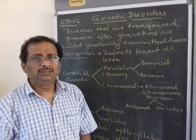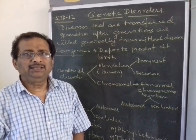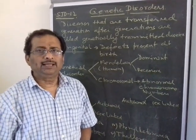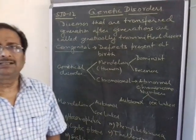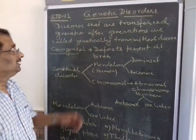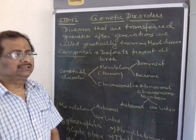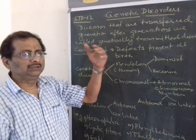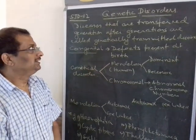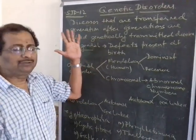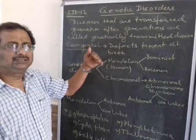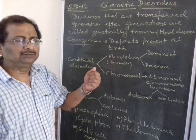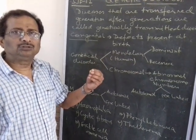For standard 12, today's topic will be a continuation of the chapter on genetics. We will discuss certain genetical disorders — the disorders which are generally transferred from the parent to the offspring through the genes. They are transferred genetically through the progeny and may be carried.